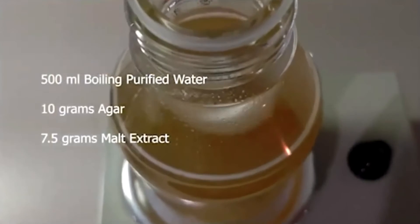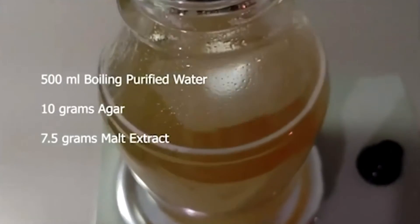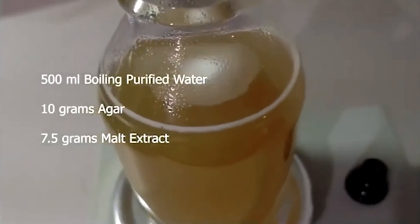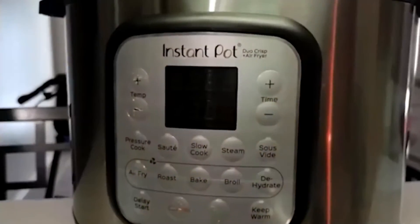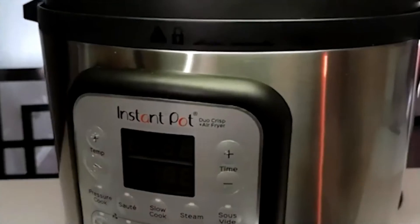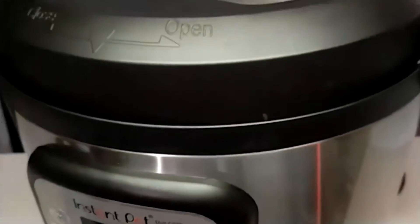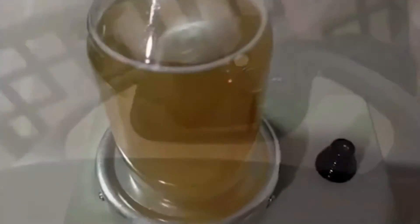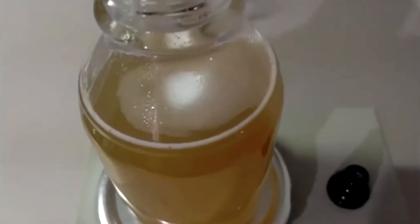Using 500 milliliters of boiling purified or distilled water, mix 10 grams of agar and 7.5 grams of malt extract. Pressure cook for no longer than 20 minutes at 15 psi so you don't caramelize the sugars or overcook the nutrients. Allow the MEA to cool between 120 and 140 degrees, then you're ready to pour.